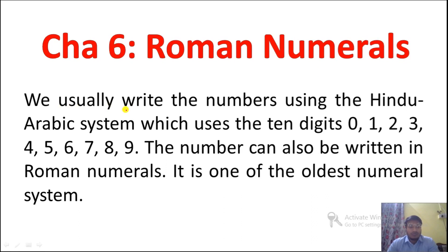We usually write numbers using the Hindu-Arabic system, which uses the 10 digits: 0, 1, 2, 3, 4, 5, 6, 7, 8, 9. Using these digits we can write any number, like 265, 331, 1000, etc. Numbers can also be written in Roman numerals.